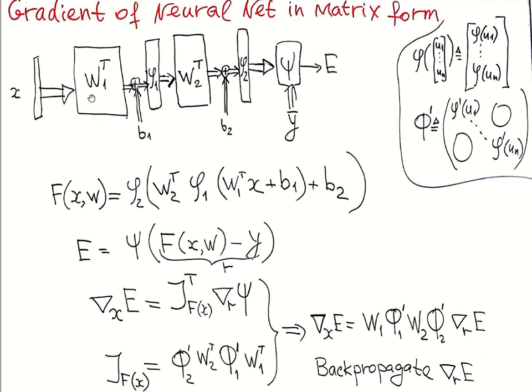So we have a way to compute Jacobians of every element in this chain. And the resulting Jacobian is just product. So we had chain w1 and then phi1 and then w2 and then phi2. So we should put the product of those Jacobians.